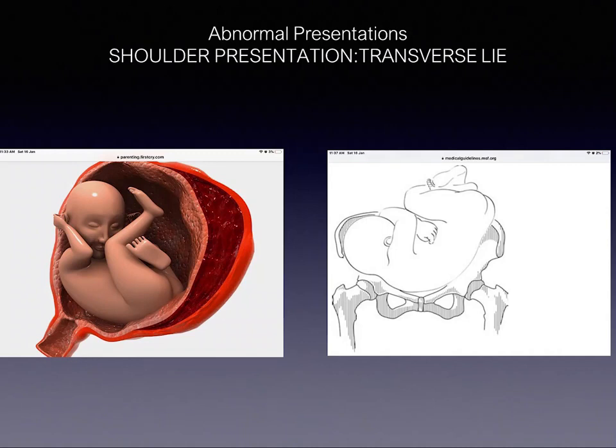Assalamu alaykum wa rahmatullah. Today our talk will be about some of the abnormal presentations. We are going to start with what is described as shoulder presentation — that is transverse lie or oblique lie.